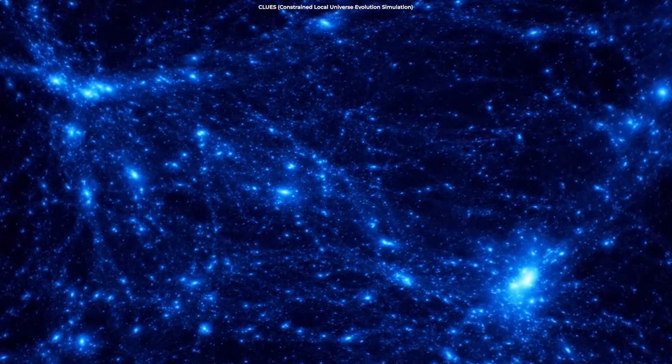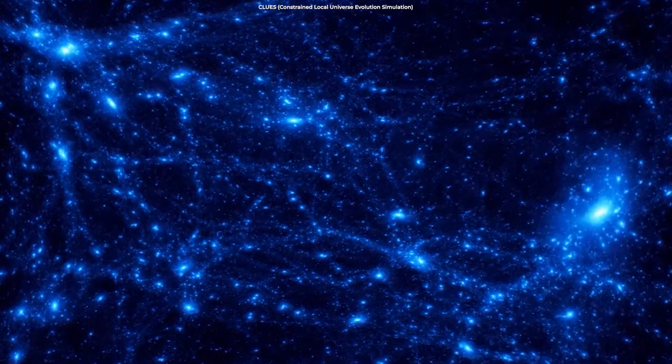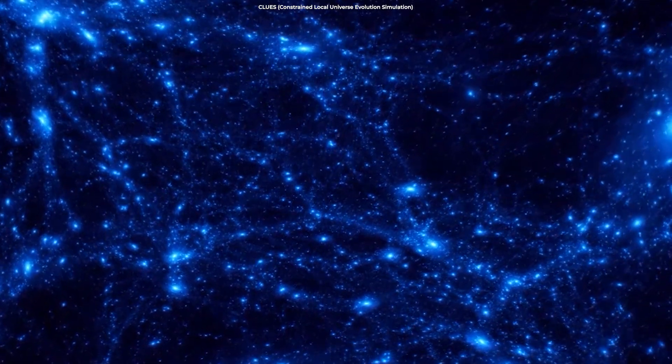Cosmic filaments are separated by huge cosmic voids, which are relatively emptier, meaning they contain very few galaxies compared to the strands.